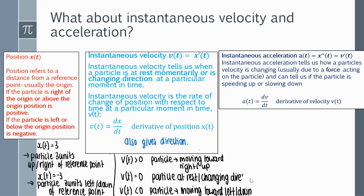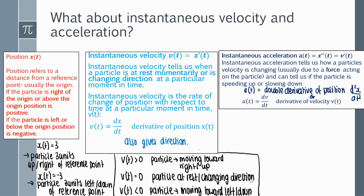Once we have position and velocity, we sometimes need to find instantaneous acceleration. Instantaneous acceleration tells us how a particle's velocity is changing, usually due to a force such as gravity or a push-and-pull motion acting on the object. This can tell us if the particle is speeding up or slowing down. Acceleration is the derivative of velocity, or equivalently the second derivative of position.